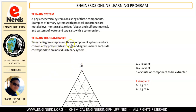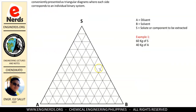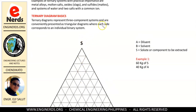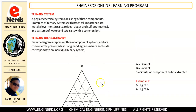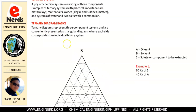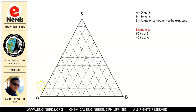A ternary diagram represents a three-component system, which is what we call a ternary system, and is conveniently presented as a triangular diagram where each side corresponds to an individual binary system. So all of our sides here correspond to a component. For this video we're going to use the variables S, A, and B — the same variables used in our liquid-liquid extraction example.